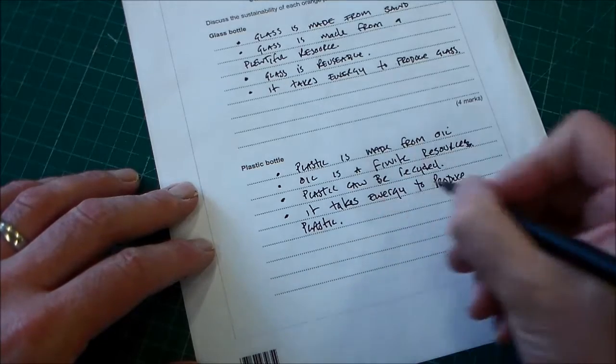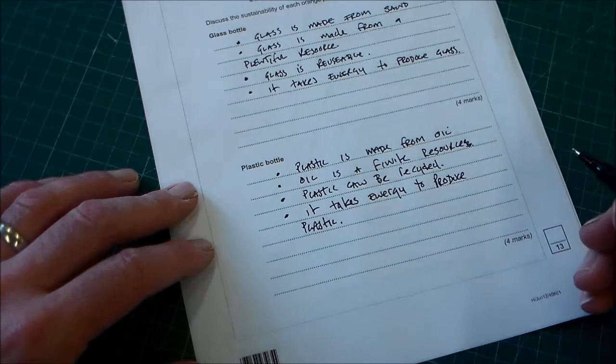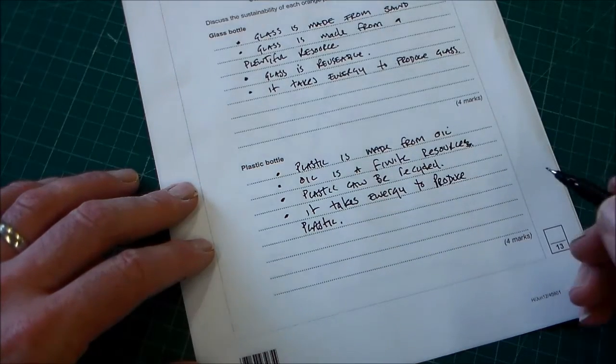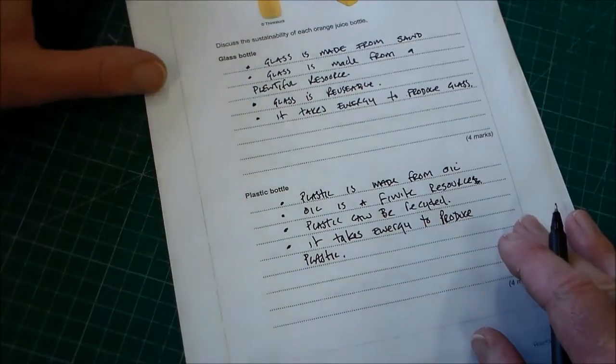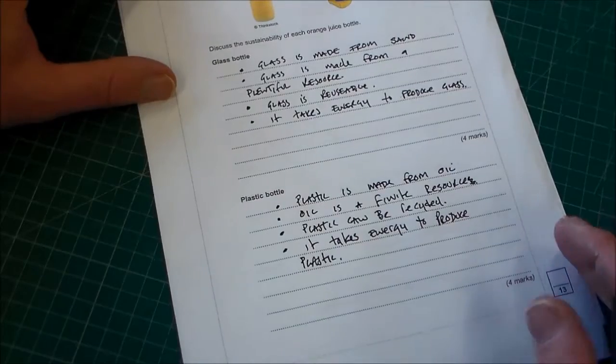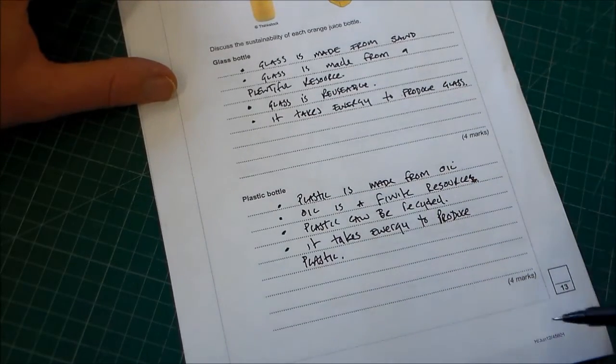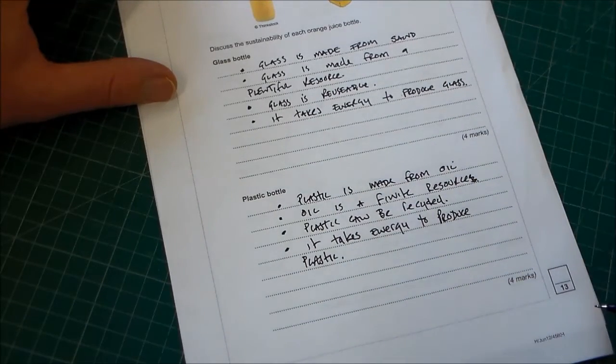We could, of course, as well say plastic can be recycled, would be another one we've got there. So there's the points there. If you can see those points, I'll just leave it there for a minute. So that would be four marks there and four marks there, which would be our 13 marks.